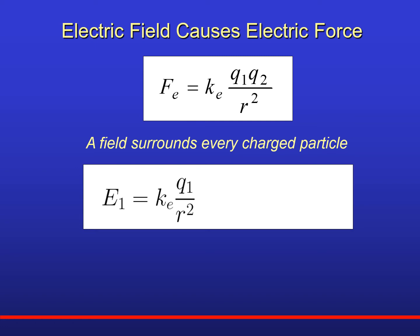This formula gives us the magnitude — we'll get to the vector properties later. The field from charge one extends out in space indefinitely. As R gets bigger, the field gets smaller; if R is smaller, the field is bigger. The force that charge one has on charge two is the field of charge one, E sub one, times Q2. If you look at the algebra, Q2 times E1 gives you the formula for Coulomb's law. We know Coulomb's law is correct — it's experimental. So we propose this idea of the field, and it clearly works because F sub E equals Q2 times E1 gives the right formula. That's how charge one exerts a force on charge two.